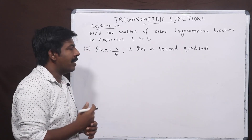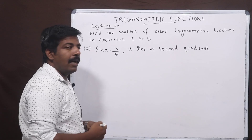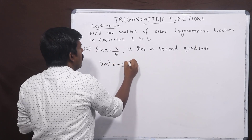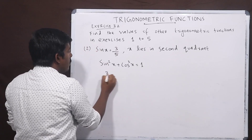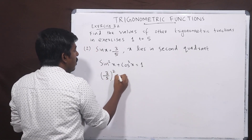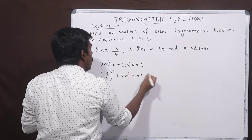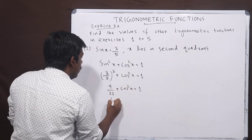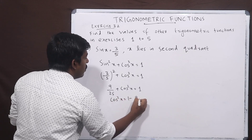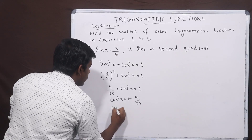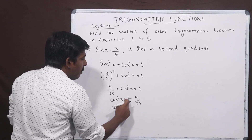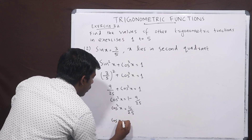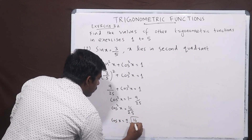Next question: sin x is equal to 3 by 5 and x lies in the second quadrant. Using the identity sin squared x plus cos squared x equals 1, we substitute: 3 by 5 squared plus cos squared x equals 1. That gives 9 by 25 plus cos squared x equals 1, so cos squared x equals 1 minus 9 by 25, which is 16 by 25. So cos x equals plus or minus square root of 16 by 25.